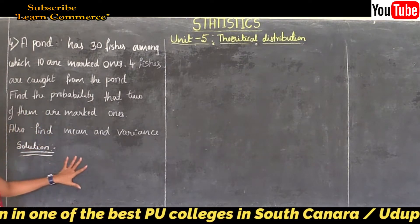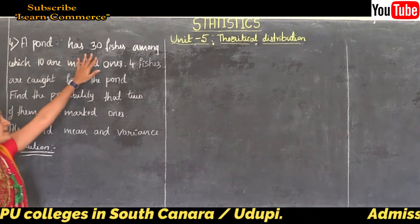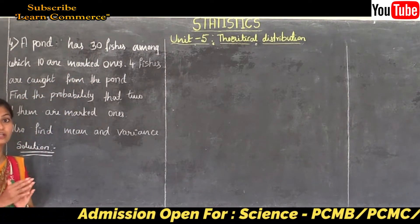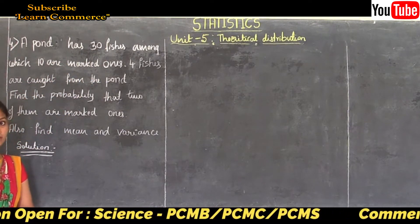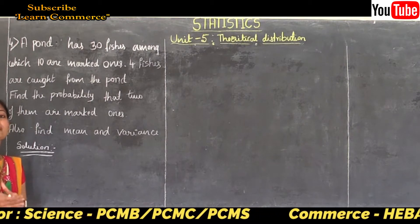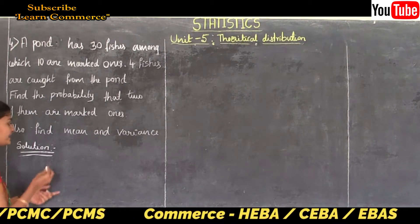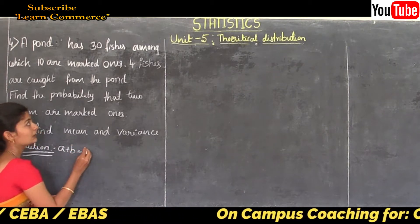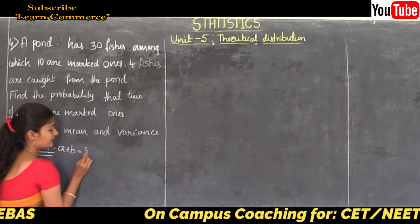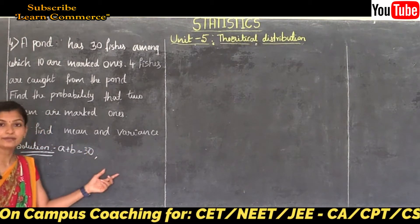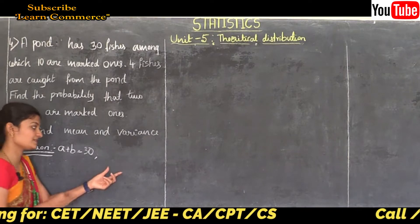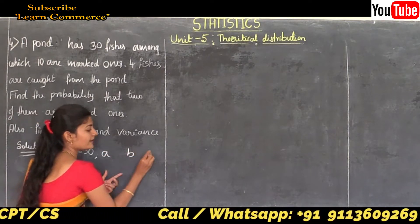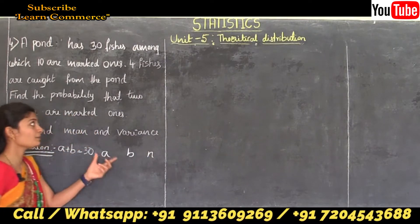Given: 30 fishes, so the number of total observations. We know that total number of observations can be written as a plus b, which is equal to 30. The parameters of the hypergeometric distribution are a, b, and n.